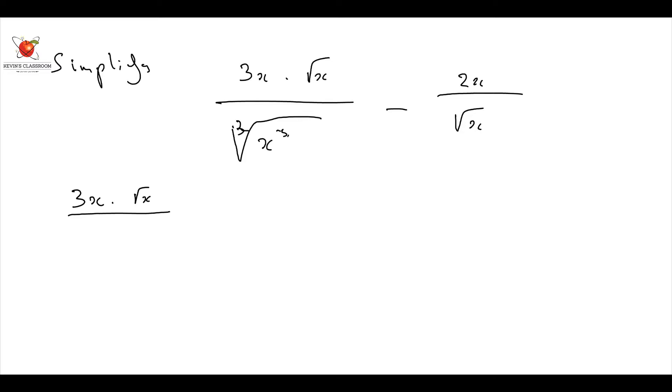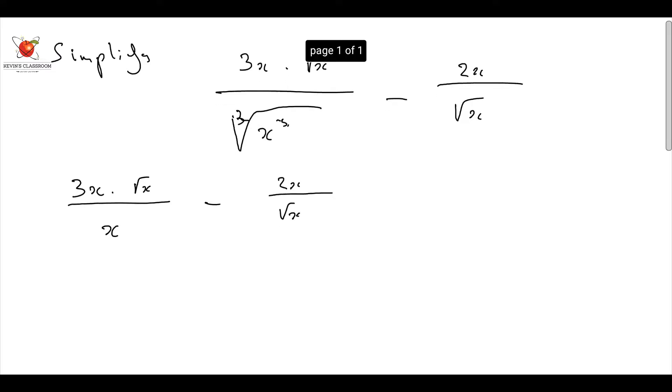Leaving me with an x minus 2x over a root x. When they've given us a plus or a minus sign, they actually want us to do it. So, what we do is we find the lowest common denominator, good old-fashioned earlier maths.